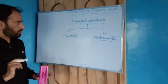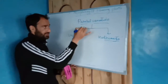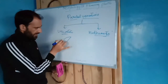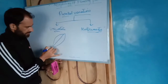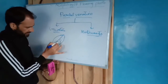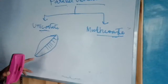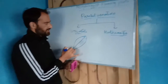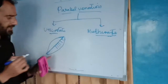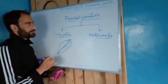Unicostate parallel venation means when there is only one midrib, or only one main vein. The other veins arise from this main vein but they run in opposite directions — they do not meet anywhere, but they are parallel to each other. That is why these are called unicostate parallel venation.